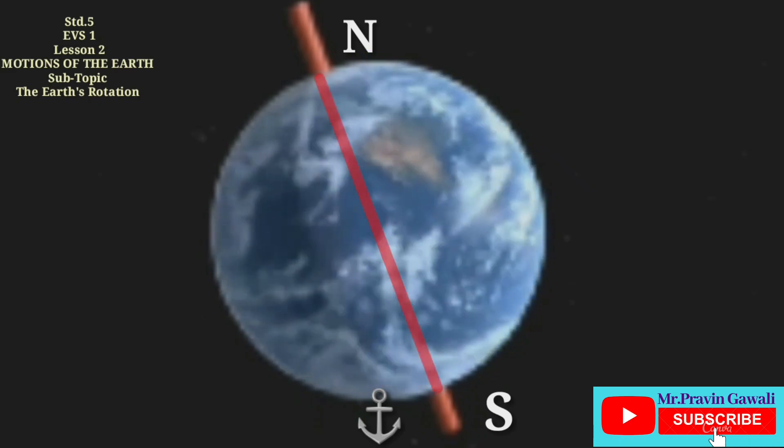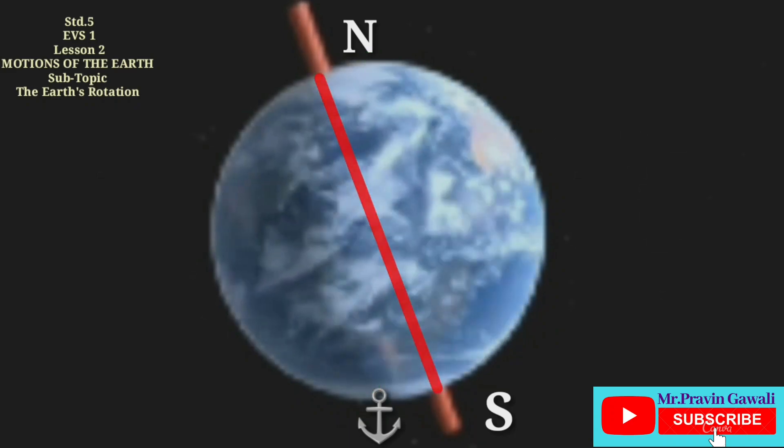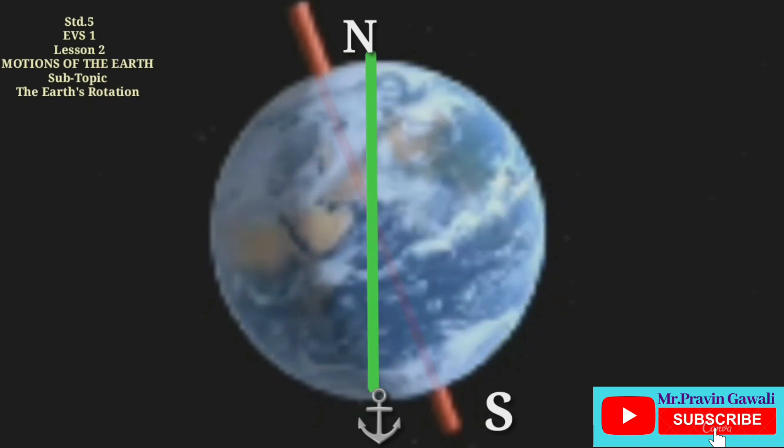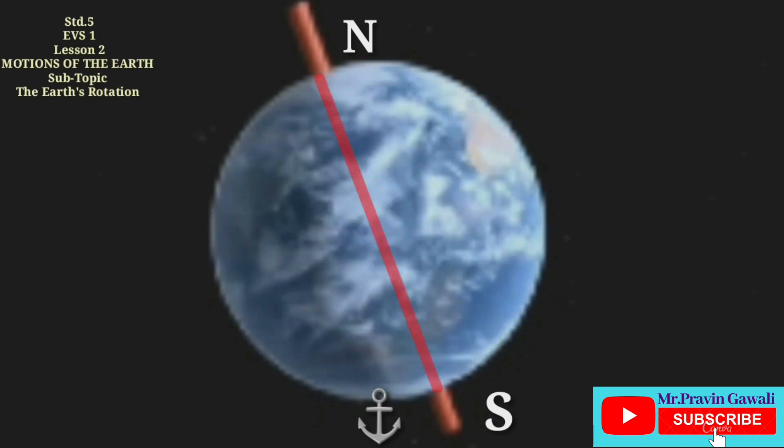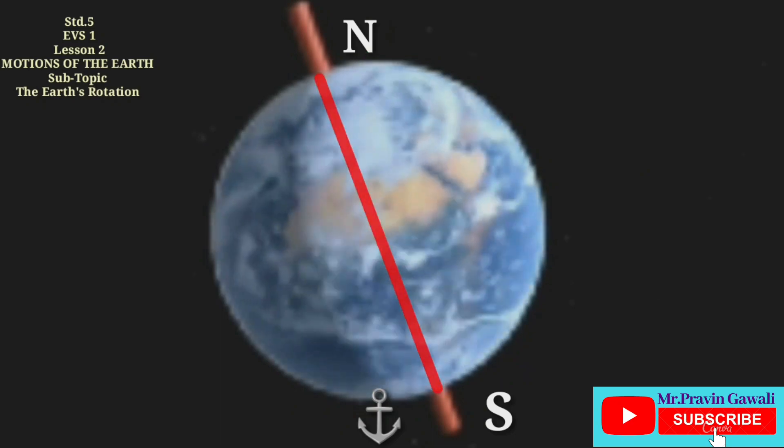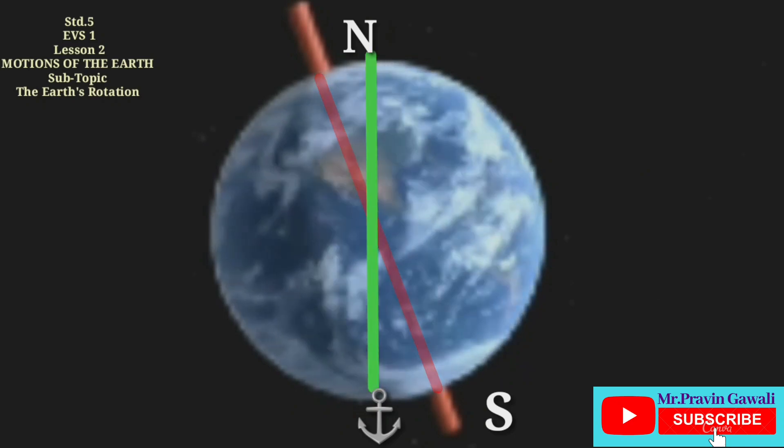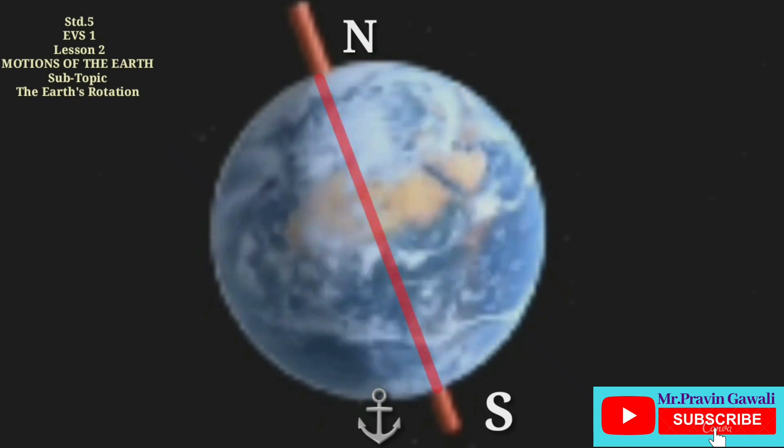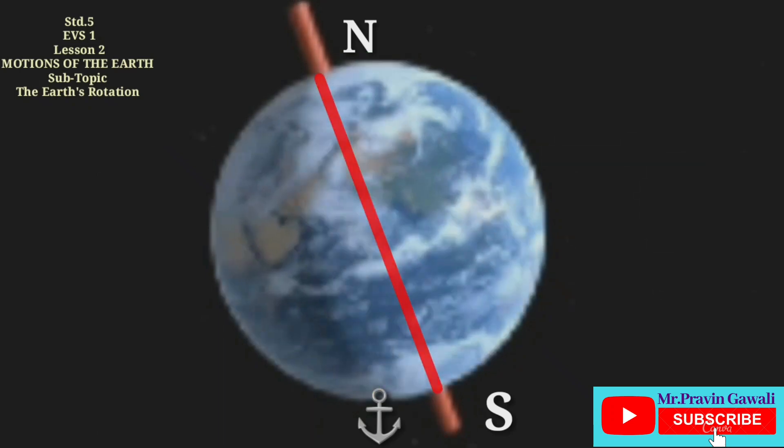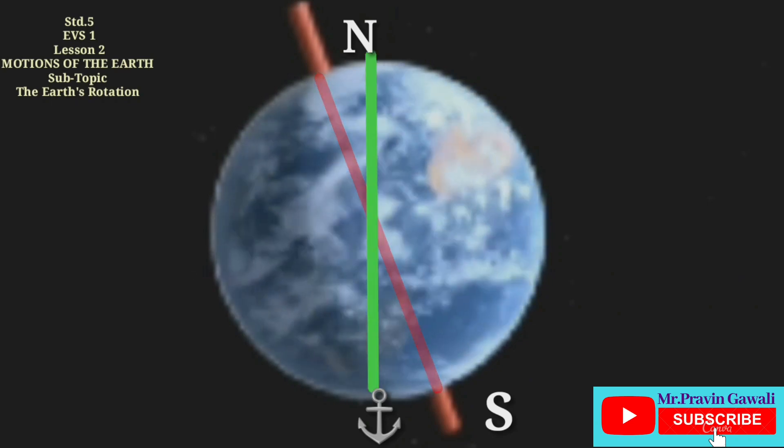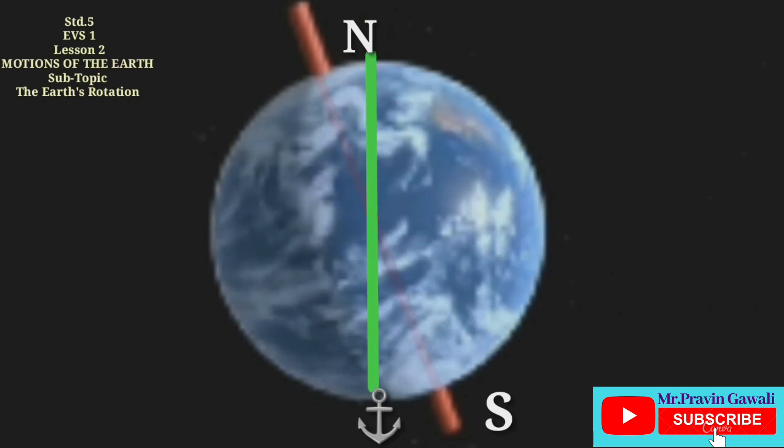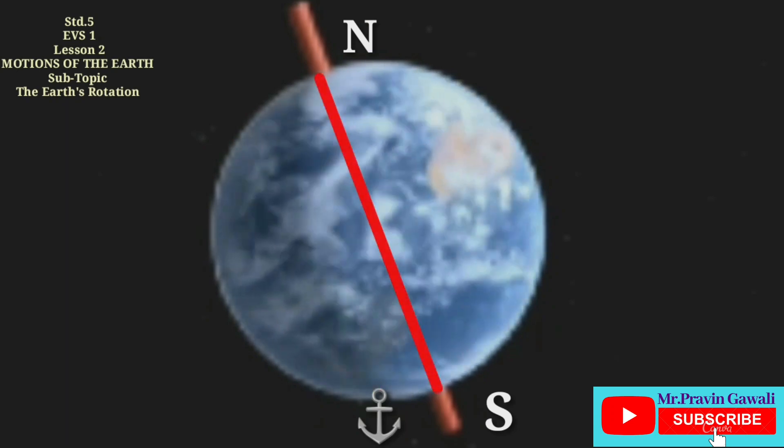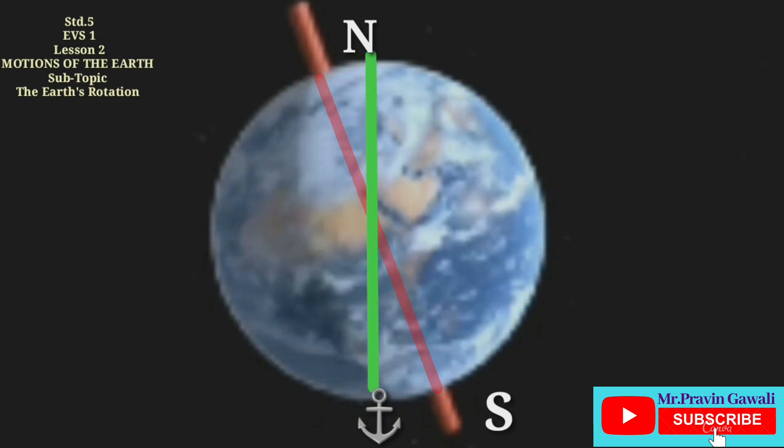The line NS in the picture shows the Earth's axis. NS means North Pole and South Pole. It passes through the center of the Earth. The points N and S are called poles of the Earth. N is the North Pole of the Earth and S is the South Pole of the Earth.